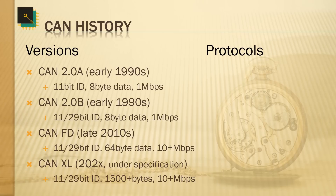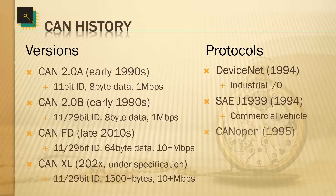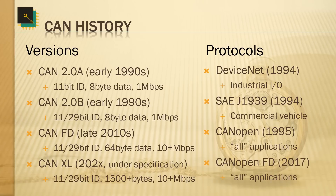A number of higher-layer protocols have been published for various CAN versions. Some of the earliest and most popular were DeviceNet and, from the Society of Automotive Engineers, J1939 — used heavily in automotive applications. There is also CANopen, and the nice thing about CANopen is that it covers all application fields: industrial, automotive, aerospace, maritime, and more. The latest addition is CANopen FD, which takes advantage of the extended data field provided by CAN FD.